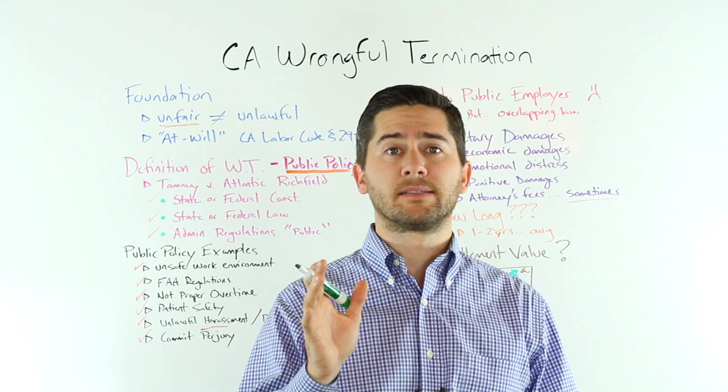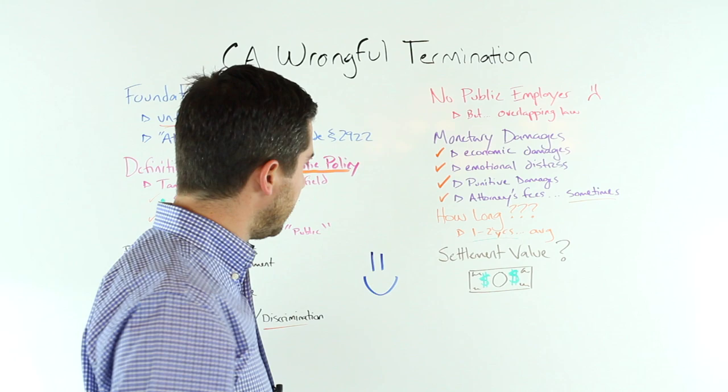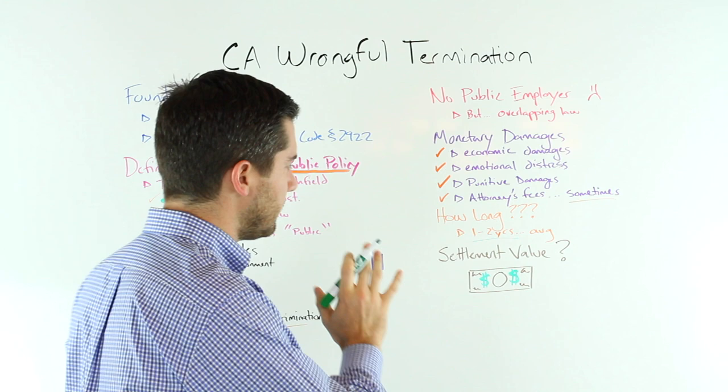If you ask most lawyers, these cases take way too long. Generally, wrongful termination cases take one to two years. If there's an appeal or any garbage like that, they can take even longer. But you don't really need to worry too much about the length of the case because your life goes on throughout the process of the case.